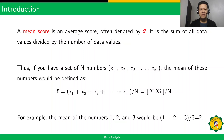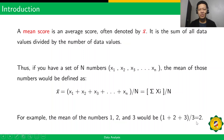For example, the mean of the numbers 1, 2, and 3 would be 2. You add 1, 2, and 3 and divide the sum by 3, and you get a value of 2.